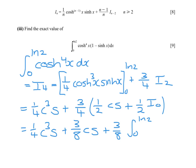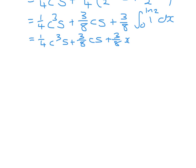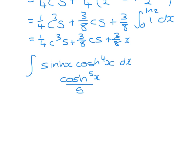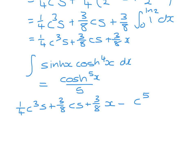The integral of cosh to the power 0 is just the integral of 1 with respect to x, which is x. So I_4 gives us one quarter cosh cubed sinh plus three eighths cosh sinh plus three eighths x. The second part of the integral is sinh x times cosh to the power 4 of x. We have a function beside its differential, since when we differentiate cosh we get sinh, so this is cosh to the power 5 over 5.